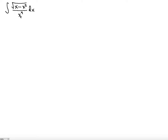You need to look at the bottom x to the fourth and tell yourself: how do I eliminate this? How do I get rid of this fraction? Notice that if you make a substitution so that this thing is a fraction, then the denominator of that fraction will go to the top. So what you can do is set x equal to 1 over u.